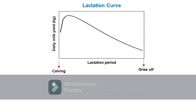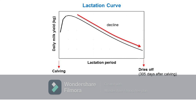The vertical axis of the graph represents the amount of milk produced daily in kilograms, while the horizontal axis represents the time within the lactation period in days. The lactation curve of a dairy cow typically reflects a peak of milk output around 4 to 6 weeks of lactation, then gradually declines thereafter.